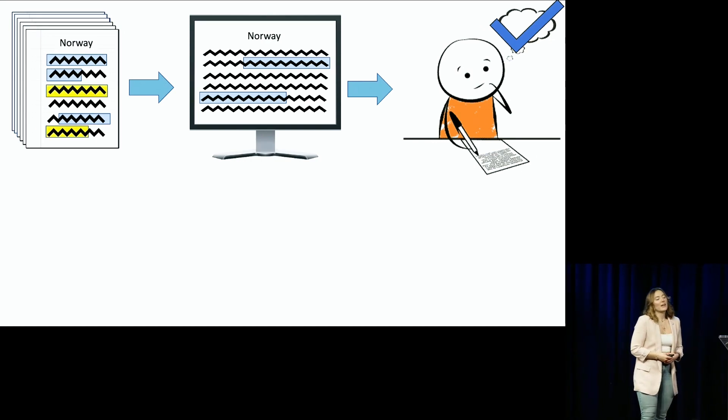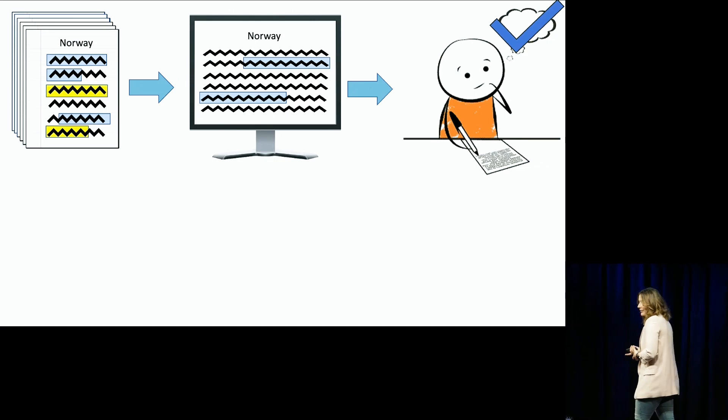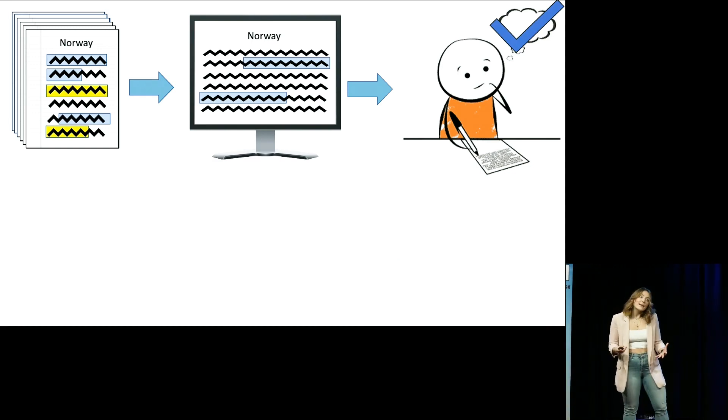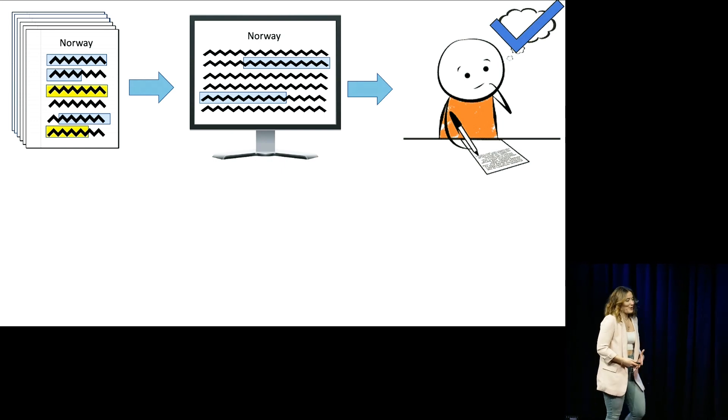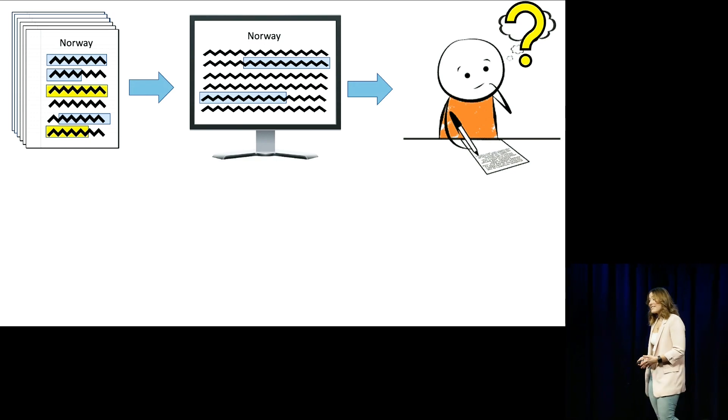I'm more interested in a situation where you learn something in class that isn't repeated online. So your professor tells you that Norway's temperate climate is due to the warming of the Gulf Stream, and by chance or by design, you don't see that information repeated online. So what happens to your memory of that information at the time of test?